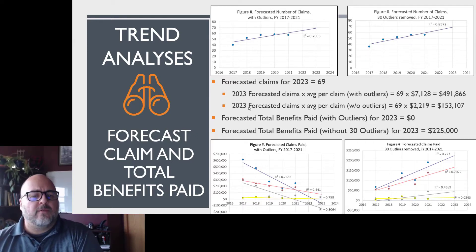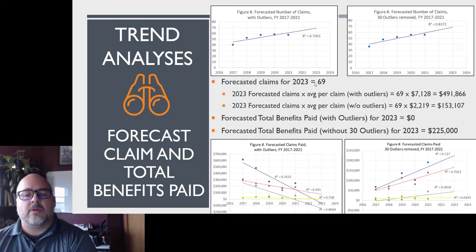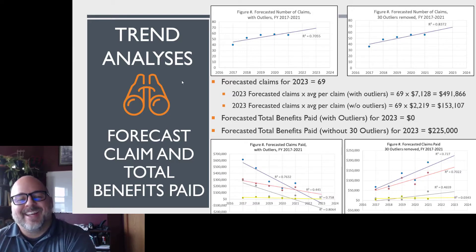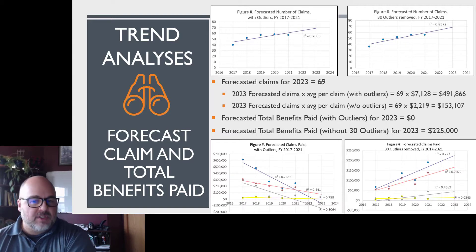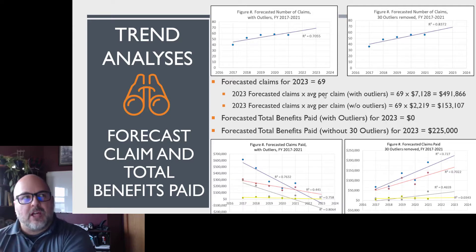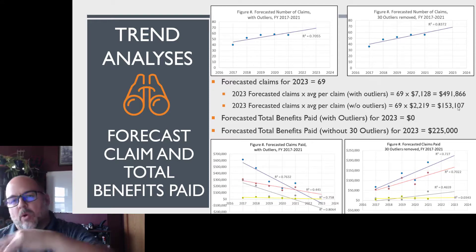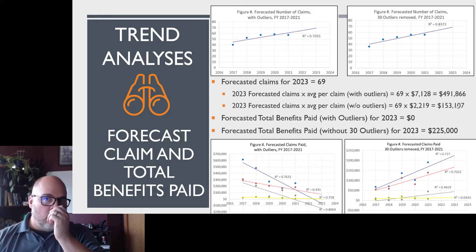How do we interpret these? The forecasted claims for 2023, which is two years into the future, is 69. I chose two years because I couldn't decide between one and three. What I did is I took the forecasted claims — 60 times 69 — then times by the average cost per claim. This is just an estimation. With outliers, it would be $491,000. Without outliers, it's $153,000. So that's kind of like a high and a low.